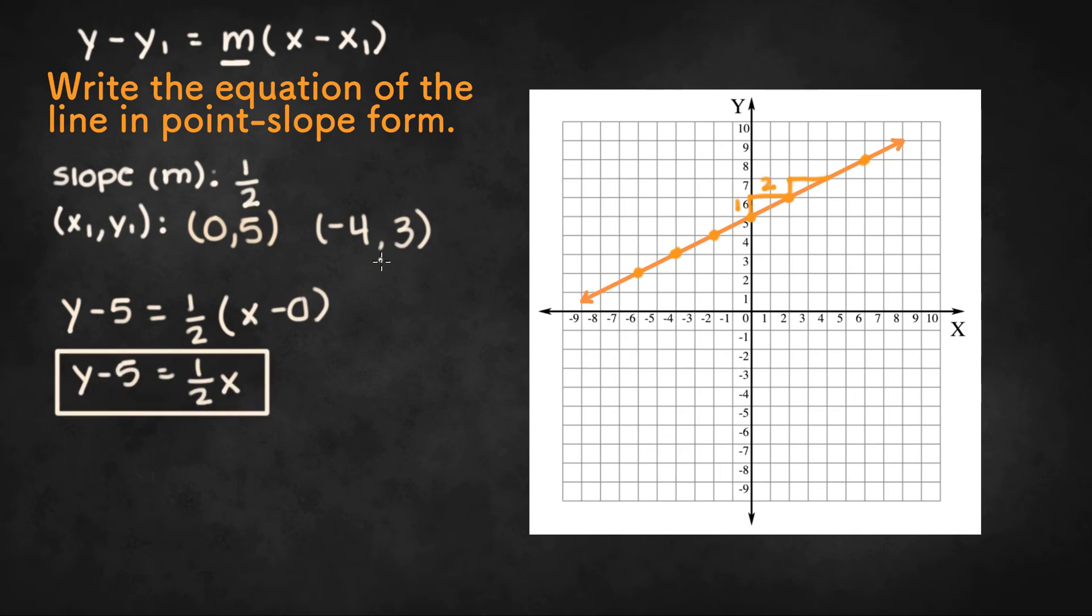Now if we use this corner right here, we could get y minus 3 equals 1 half times x minus negative 4, or x plus 4.